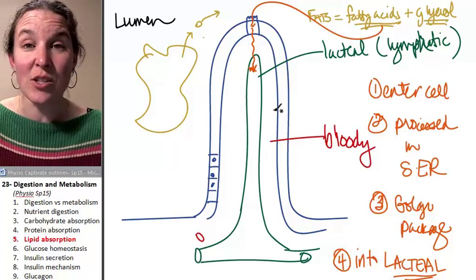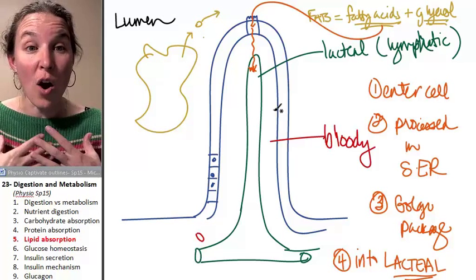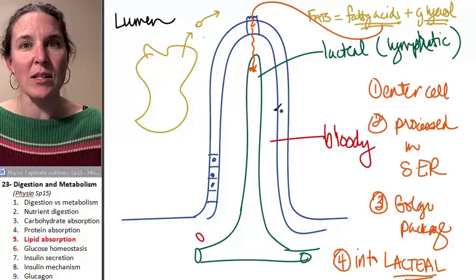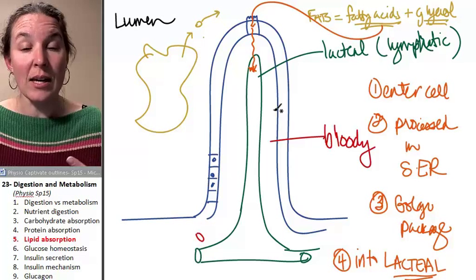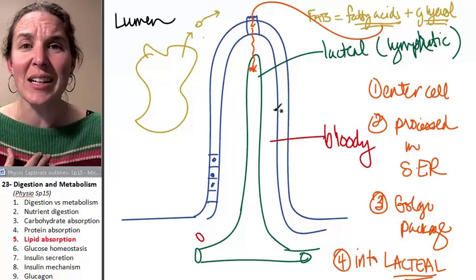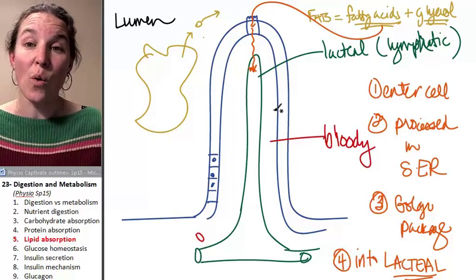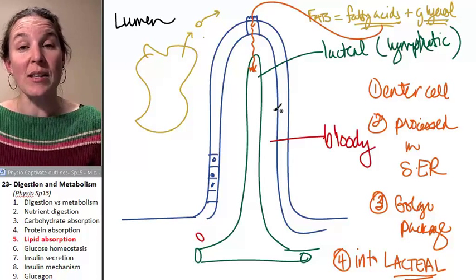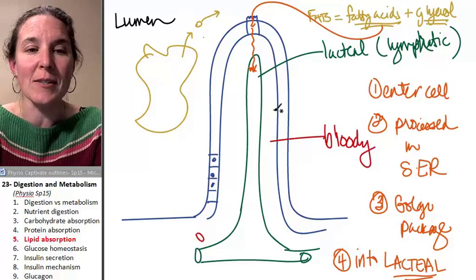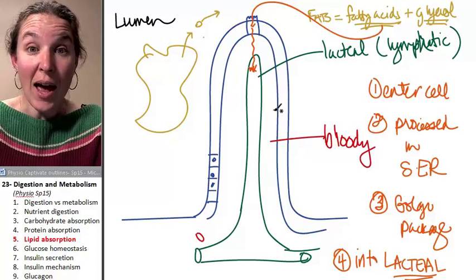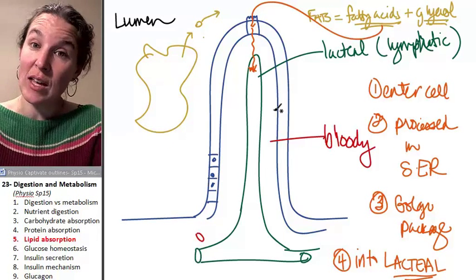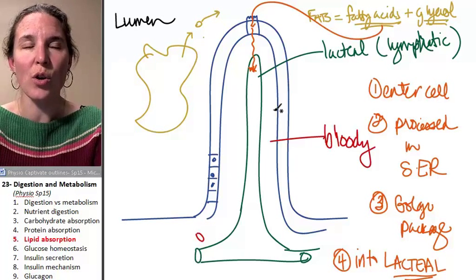So the fats ultimately are going to enter the lacteal. They're not entering the bloodstream. However, we know that all our lymphatic juices that get dumped in, they all are going to enter into your cardiovascular system up by your sternum anyway. So the fats are going to get into your blood. They just go through the lacteal first. All right, so you now have lipids and everything in your system.